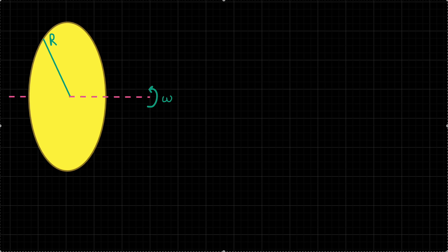We have an insulating disk of radius capital R. The disk is rotating about an axis going through its center. The axis is represented with the dashed line in the picture and it's perpendicular to the plane of the disk.